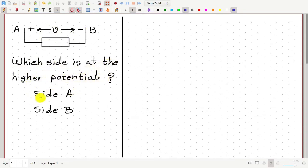Is it side A or is it side B? I suppose many of you have answered side A. That's probably because you see this plus symbol beside side A and minus symbol beside side B.